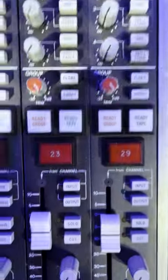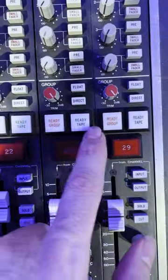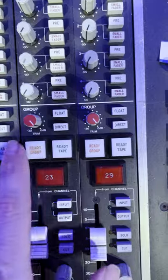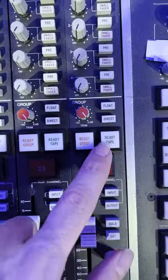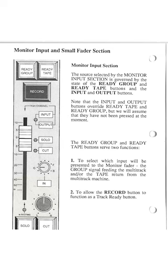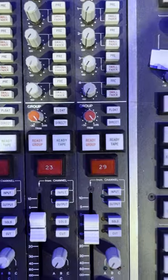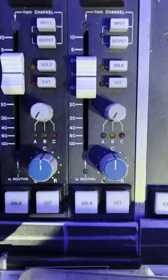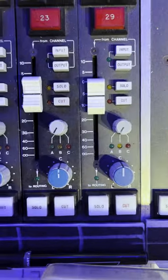Down here are what's known as your status buttons, and they control the input to the monitor path. Typically, your channel path shows up on big faders and your monitor path shows up on small faders.